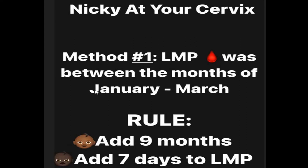The first method applies if the first day of your last menstrual period was between the months of January through to March. So if your LMP started in January, February, or March, we use Method One. Method One states that we add nine months and then add seven days to the first day of your last menstrual period.